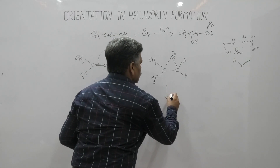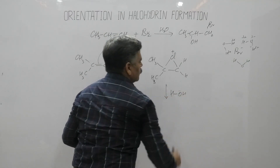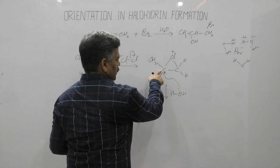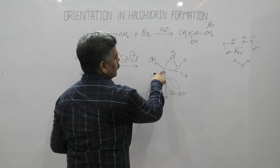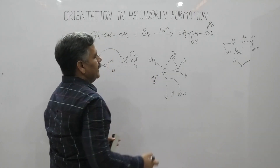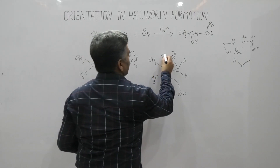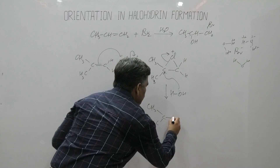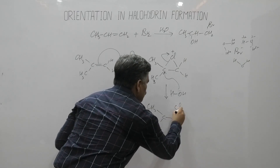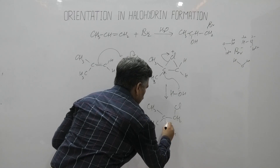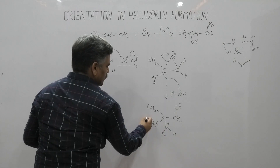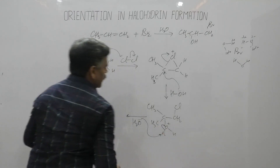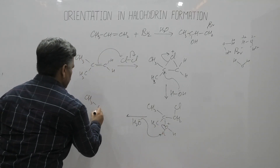The second step is the attack of the nucleophilic hydroxyl group from water at the more stable tertiary carbocation carbon, since it forms in excess. The incoming nucleophile attacks this carbon, giving CH₃C(CH₃)(OH)-CH₂Cl. One hydrogen from this intermediate oxonium ion is abstracted by water, and we get the final product: chlorohydrin.